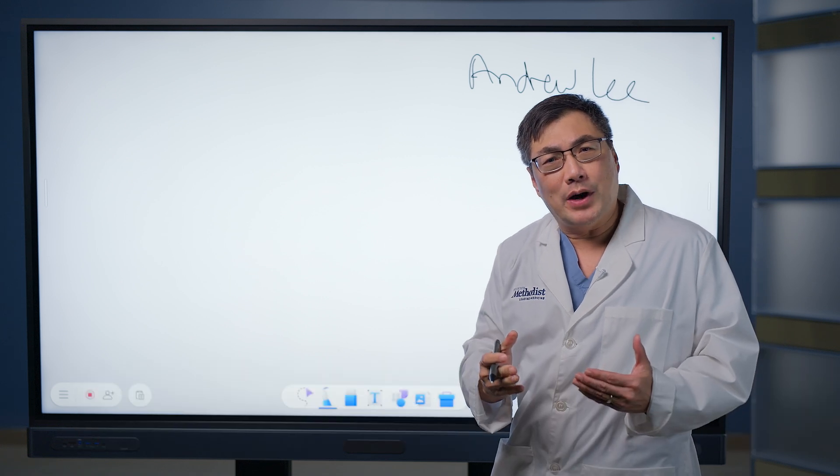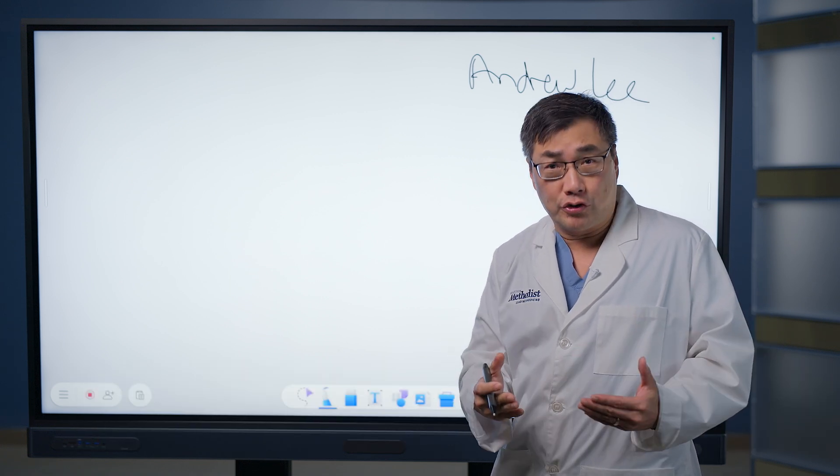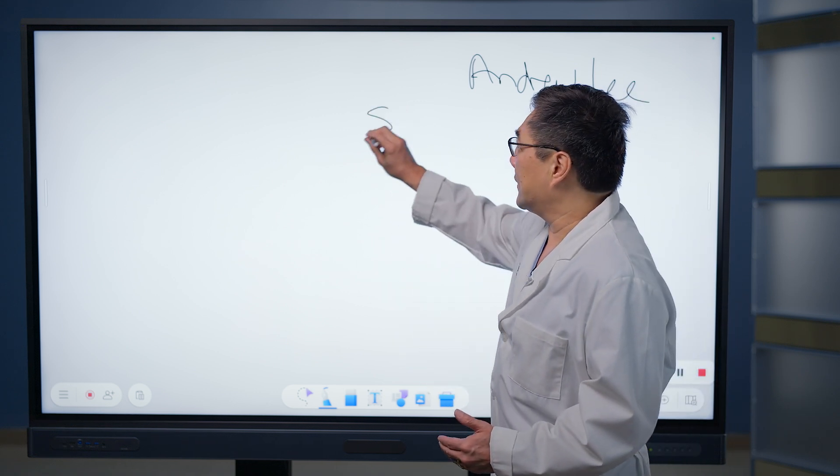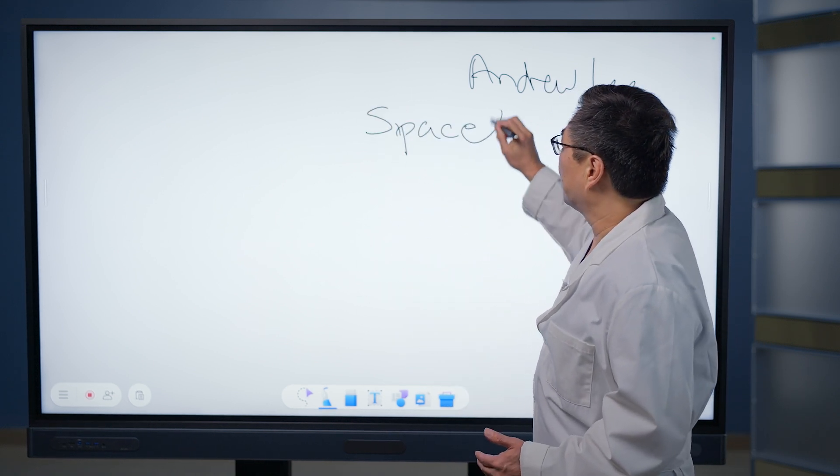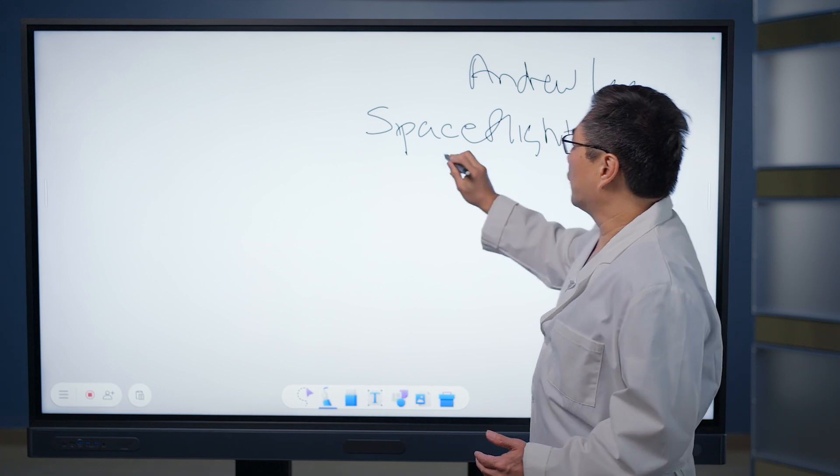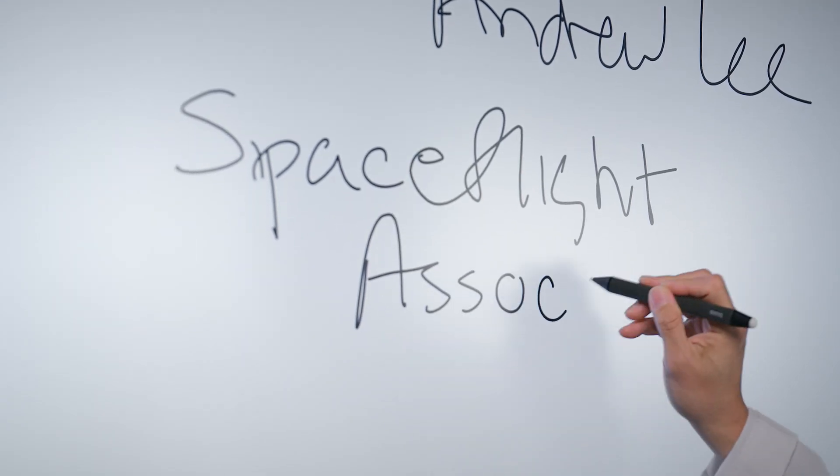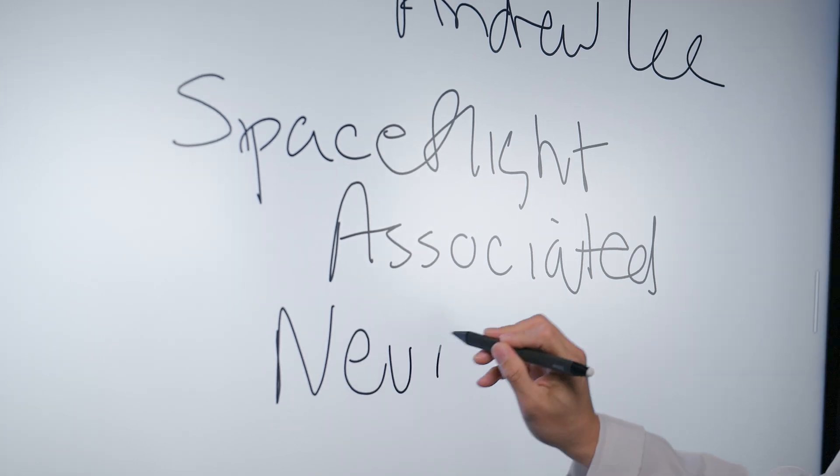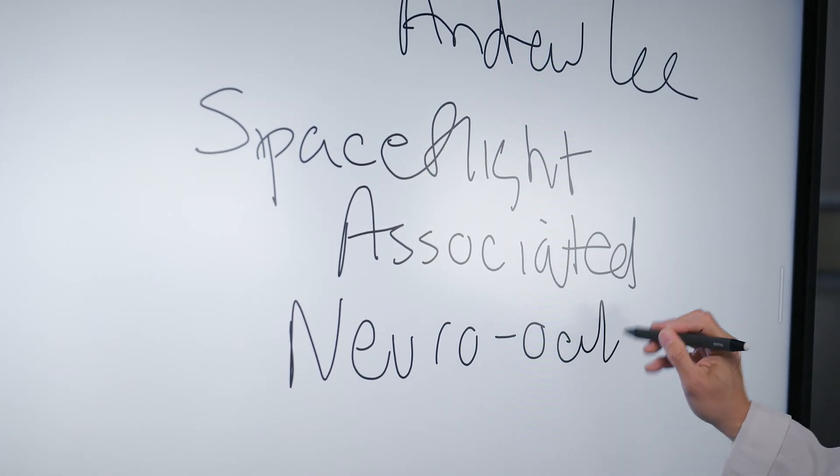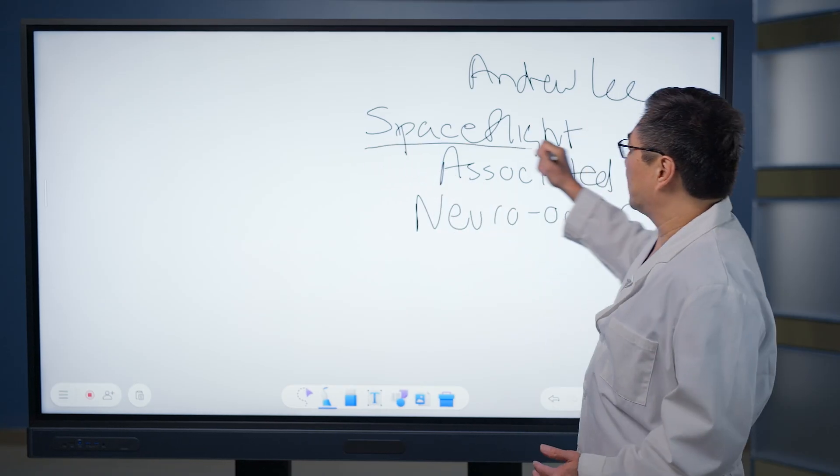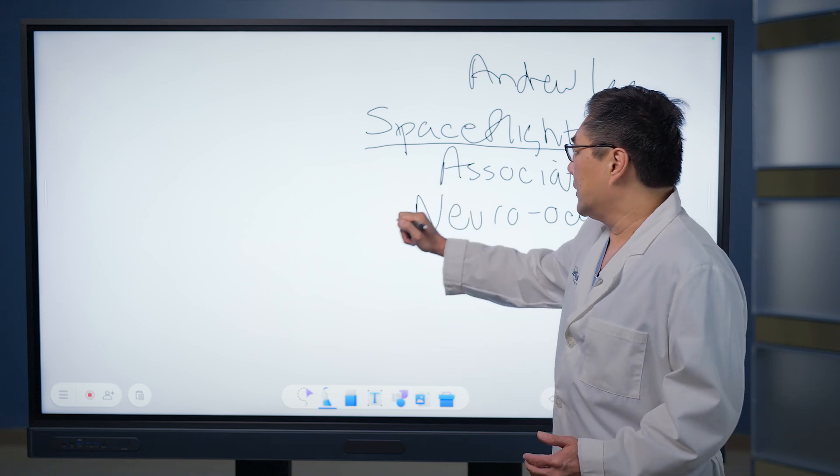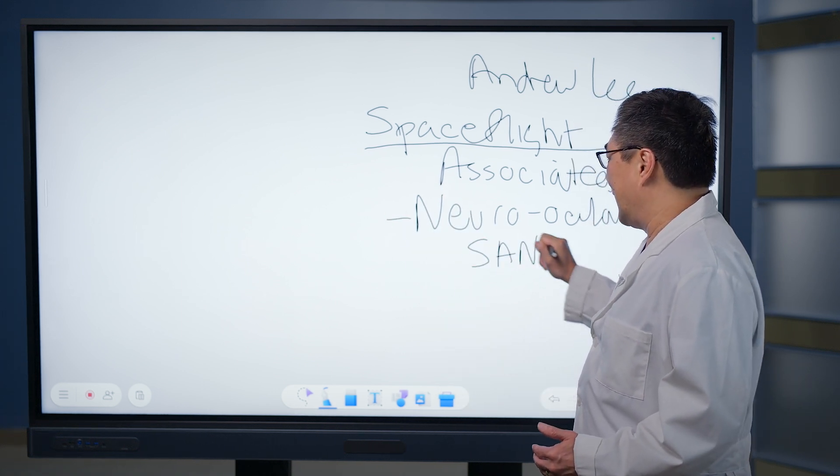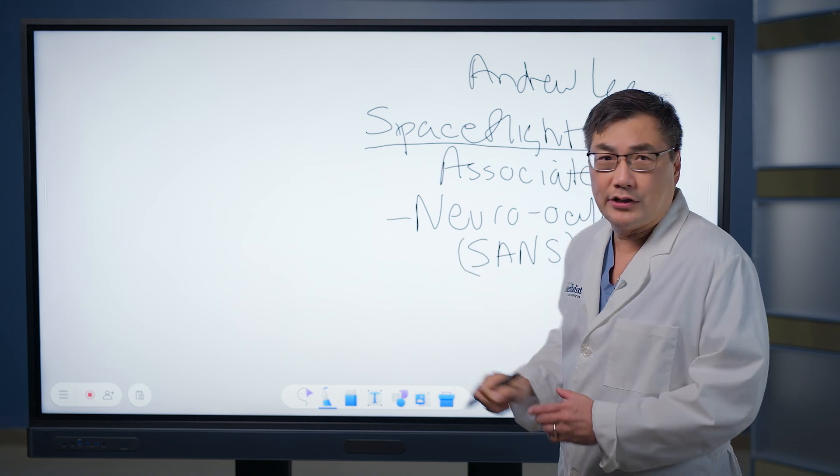Today I'm going to be talking to you about a disorder that has no terrestrial equivalent. It's literally an extraterrestrial disorder. It is called Spaceflight Associated Neuroocular Syndrome, and it is exactly what it says it is - it is only associated with spaceflight, it is neuroocular, and it's a syndrome. We call that SANS, Spaceflight Associated Neuroocular Syndrome.